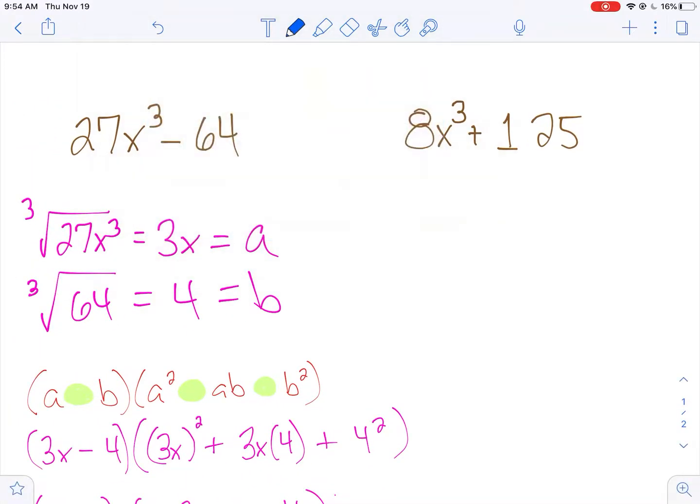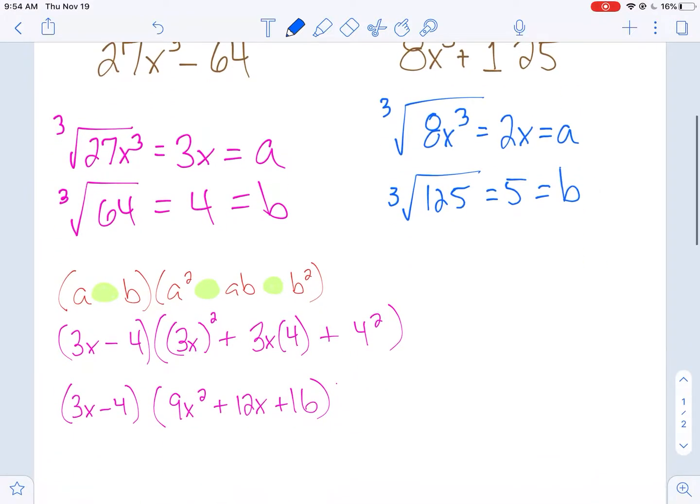This one's going to be a sum. I get 8x³. Find the cube root of that, which would be 2x, that's going to be a. Find the cube root of 125. That's 5, and that's going to be b. Once again, we're just filling in blanks. Same formula.